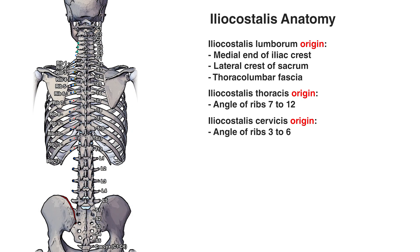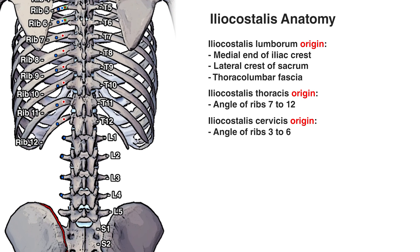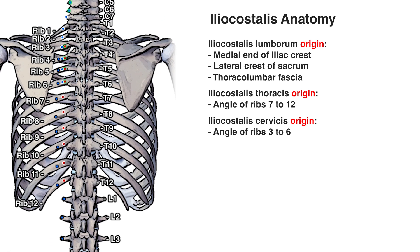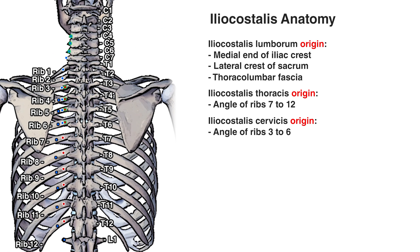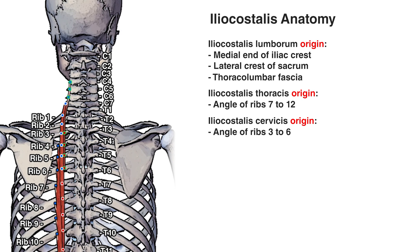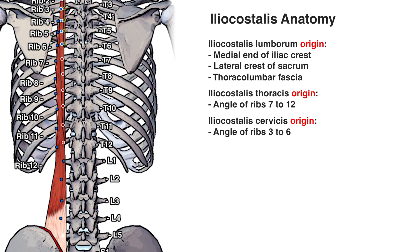Now you can see the insertion points brought into view, all colored in blue. Much like the origin points, I've color-coded them the same way: the black outline is the lumborum, the white outline is the thoracis, and the green outline is the cervicis. Here they are placed on top of the muscle so you can better visualize where each of these sections connects.